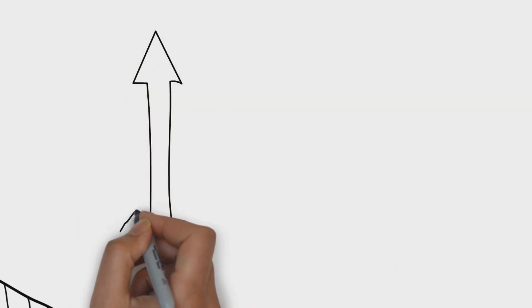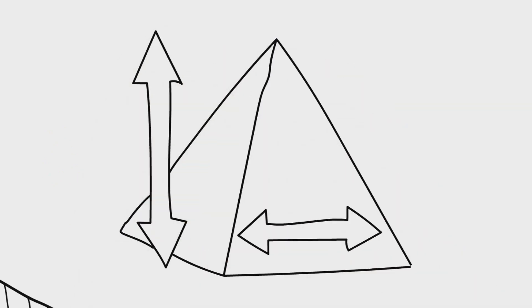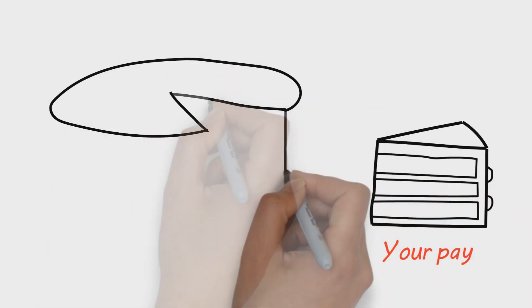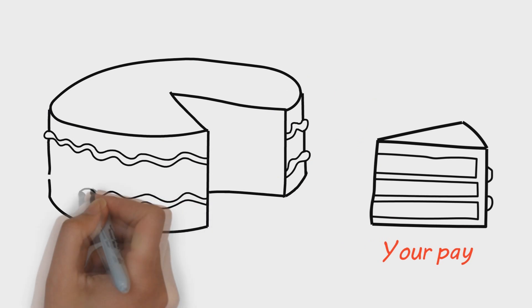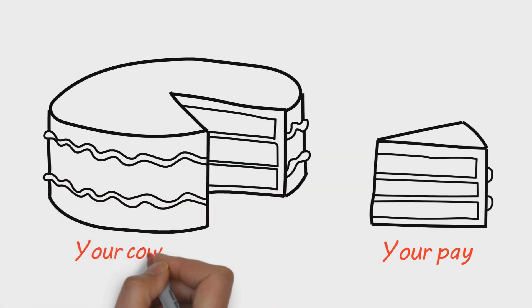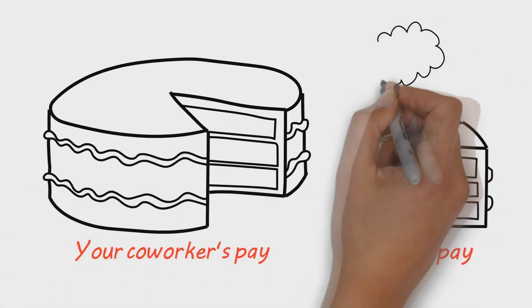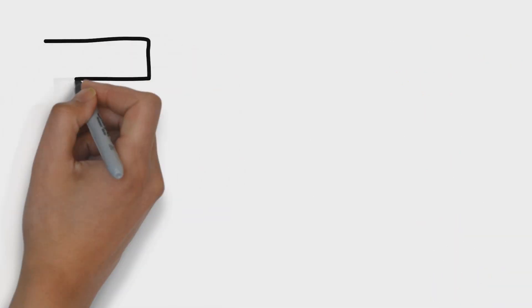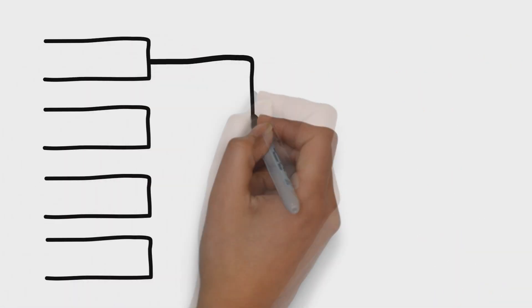First, companies must distinguish between vertical and lateral pay gaps in their hierarchies. Lateral gaps exist when workers at the same level of a company earn different wages. These gaps, when unjustified, can demoralize people and create feelings of injustice. This is partly why Wimbledon, under pressure, equalized its prize money for men and women in 2007.